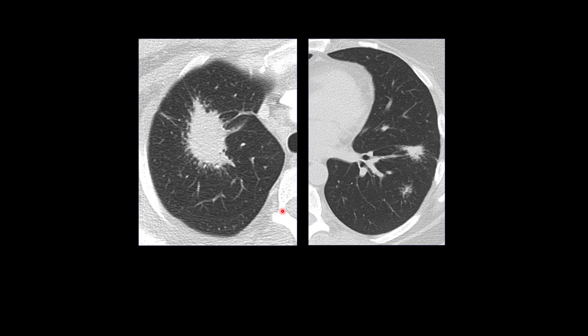You might remember the galaxy sign. This is a sign described in sarcoid when the nodules cluster together to form what looks like a mass or consolidation, but when you look at the periphery of the lesion, you can see that it is made up of tiny little nodules. Pseudoplaques are the same phenomenon, but happening at the lung periphery rather than in the middle of the lung.